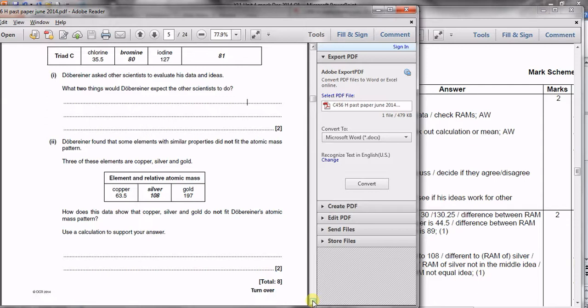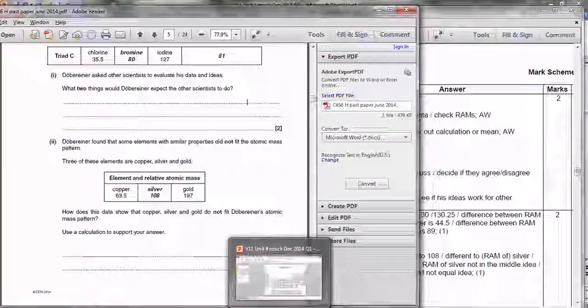Then the last part asks you why silver doesn't fit Dobereiner's triads. If we look at what's happening, we have to get the average of the top and bottom masses, the average of copper and gold. That should, if it fits Dobereiner's triads, be fairly close to 108, the mass of silver. Let's have a look at that calculation.